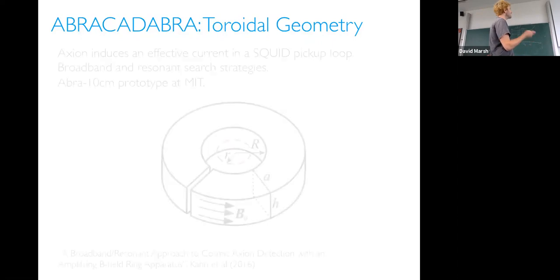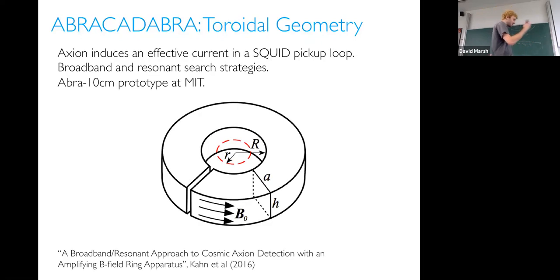The first experiment I want to tell you about today is called ABRACADABRA — a great exercise in acronym making. ABRACADABRA works by the principle of axion electrodynamics. You have Maxwell's equations with an axion source, which is the dark matter background field oscillating. It looks like a pseudo-magnetic field — just like magnetic fields can source currents, the axion field can also source a current.